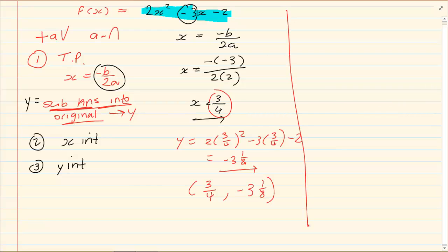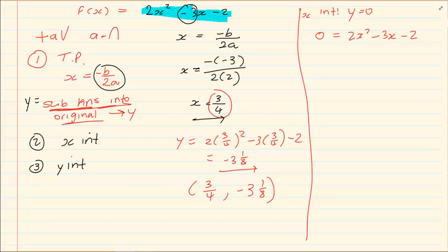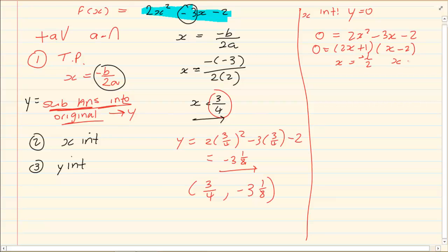Next we are going to do the x intercept. X intercept means y equals 0. So I have 0 equals 2x squared minus 3x minus 2. Now this is a quadratic equation. So either you can use the formula to solve it or you can simply do the brackets. But the choice is really yours. To do this graph you must know your algebraic expression. How are we solving for x? I've used the brackets. X equals minus a half and x equals 2.